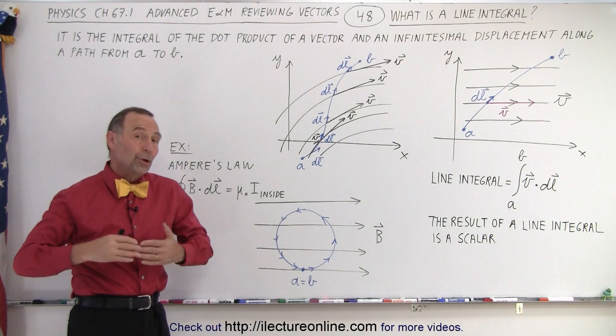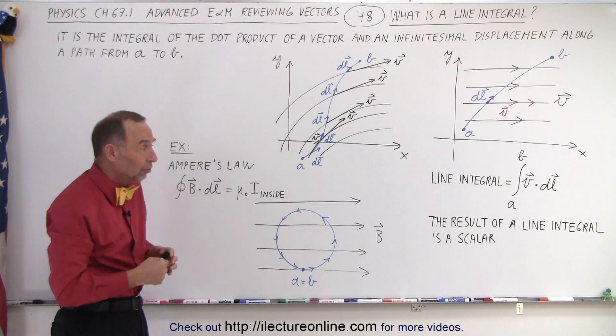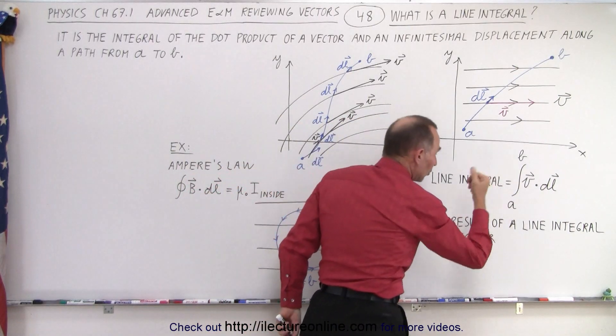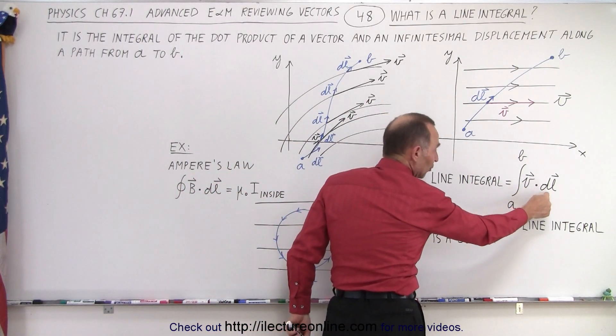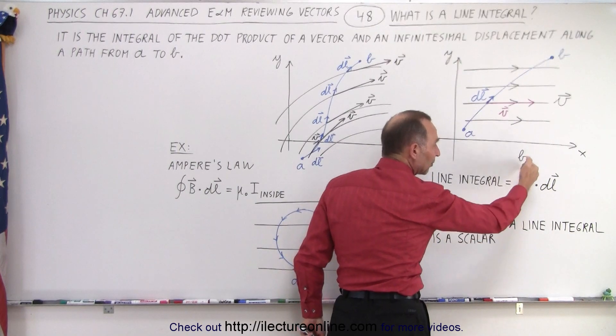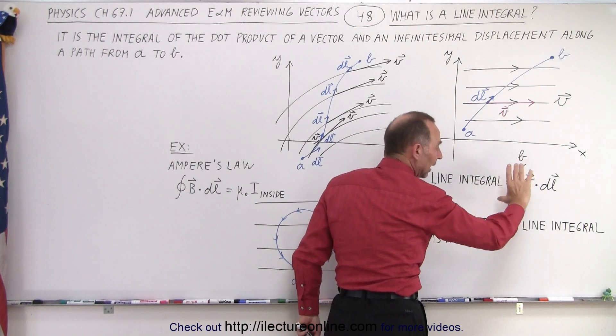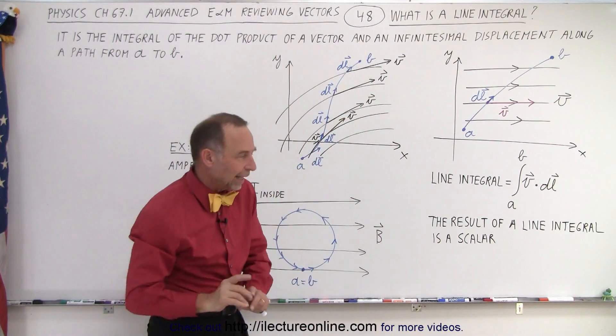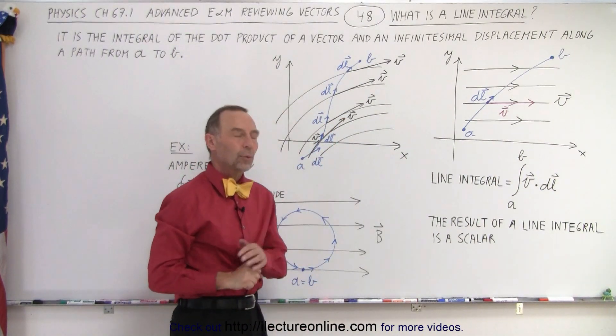You might say, well is there a purpose to that? Well there actually is. So here you can see the general equation of it: it's the vector multiplied times a small displacement, you do that over and over and over again an infinite number of times, you add them all up via the integral, and that's called the line integral. And notice that the result of the line integral is a scalar quantity.